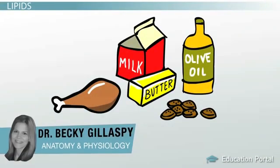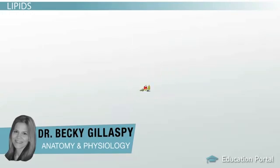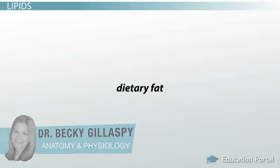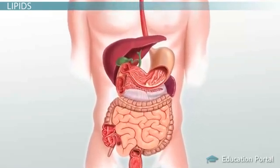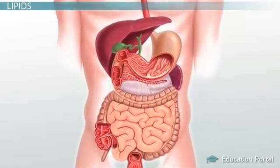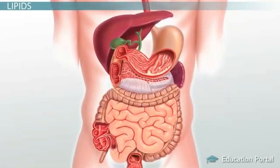Foods such as meats, dairy products, seeds, nuts and oils contain dietary fat. Fat is a common example of a lipid, and in this lesson you will learn about the unique way lipids, such as fats, are broken down and absorbed out of the digestive tract.